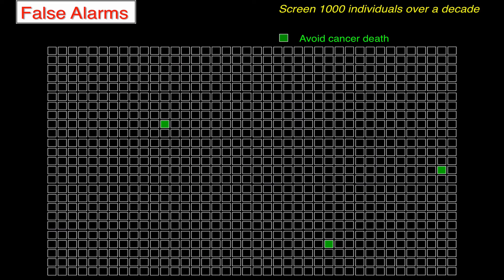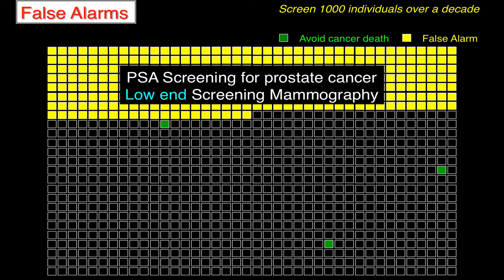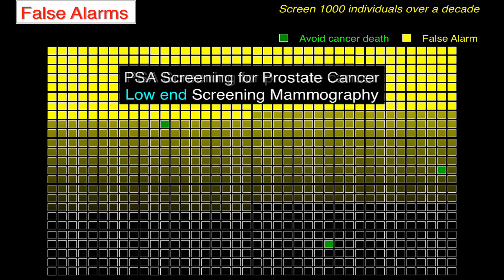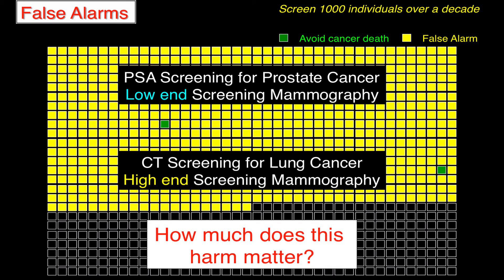Let's talk about the false alarm problem. This is 300 false alarms — the case for PSA screening for prostate cancer or the low-end estimate for screening mammography. This is 700 false alarms — the case for CT screening for lung cancer or the high-end for screening mammography. Having a false alarm and avoiding a cancer death are very different outcomes — clearly one is much more important than the other. But it's relevant to ask how much the harm of false alarms really matters.